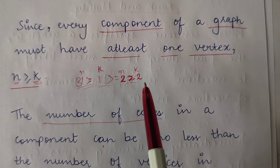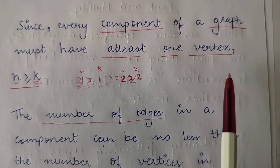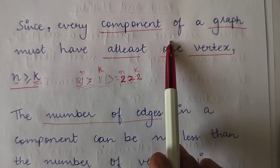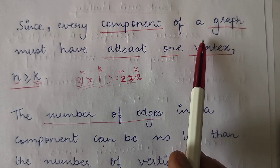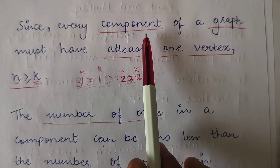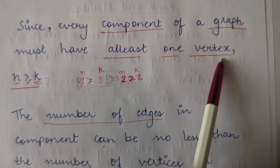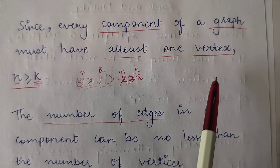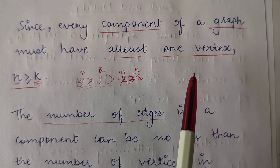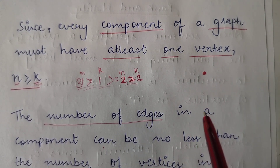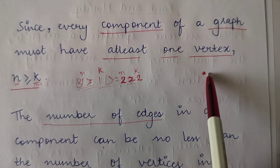Since every component of a graph must have at least one vertex, whether it is a connected or a disconnected graph — a connected graph will have one component, a disconnected graph will have more than one component. But irrespective of that, every component must have at least one vertex. We have already studied that a graph still exists if there are no edges in it; if there are only vertices and no edges, we still call it a graph. But it cannot be called a graph if there is no vertex in it.